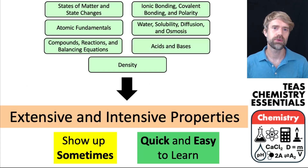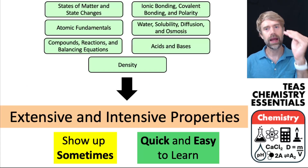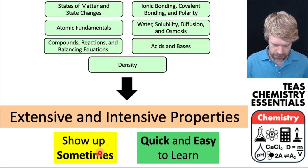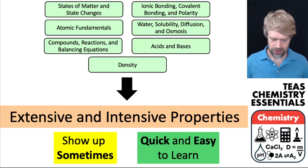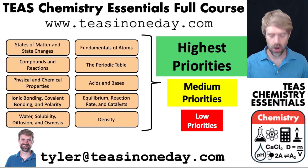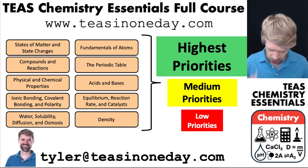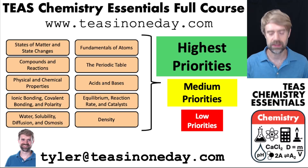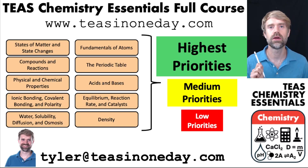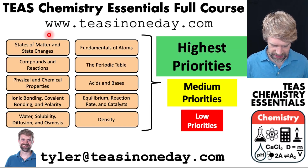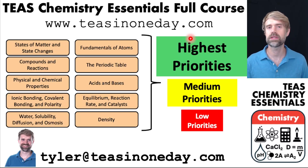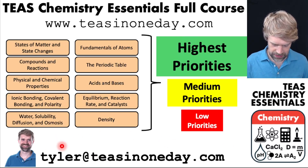Learning about extensive and intensive properties is a really good way to push your score even higher. That's because they sometimes show up on the TEAS, but they are really quick and easy to learn. This video is part of my TEAS Chemistry Essentials full course, which covers all of the important chemistry topics you need to know. We lay out exactly what your highest, medium, and low priorities should be, so you know exactly what to spend time on. You can find that course at teasinoneday.com, and if you have any questions, send me an email at tyler@teasinoneday.com.